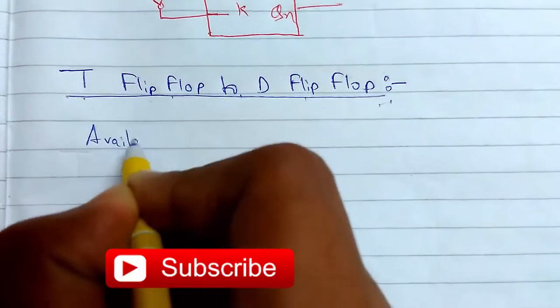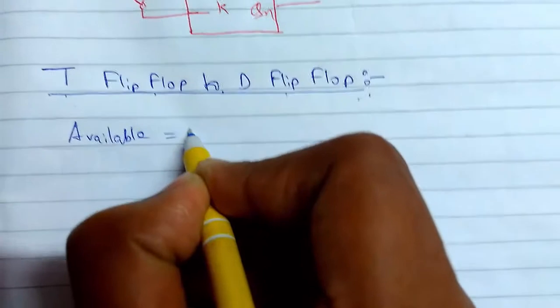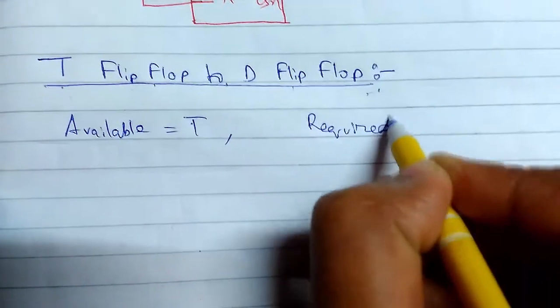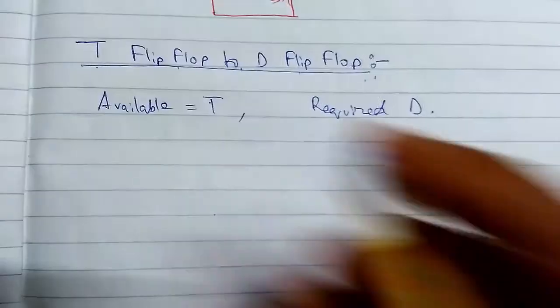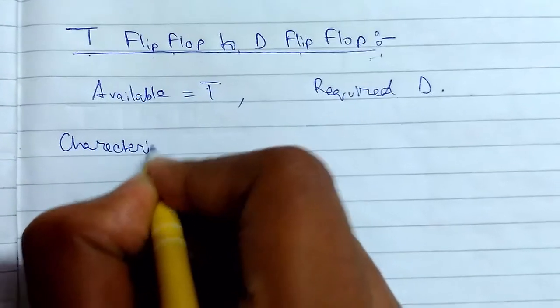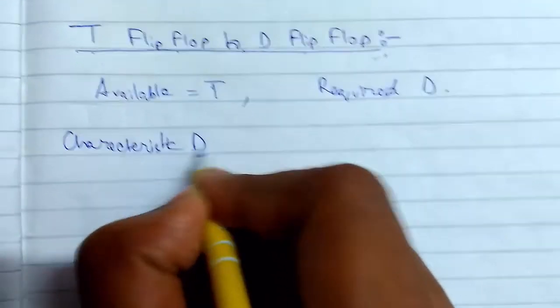So first of all we need to identify available flip-flop is our T flip-flop and required is D. Then we need to find the characteristic table of required. Characteristic table of D flip-flop.